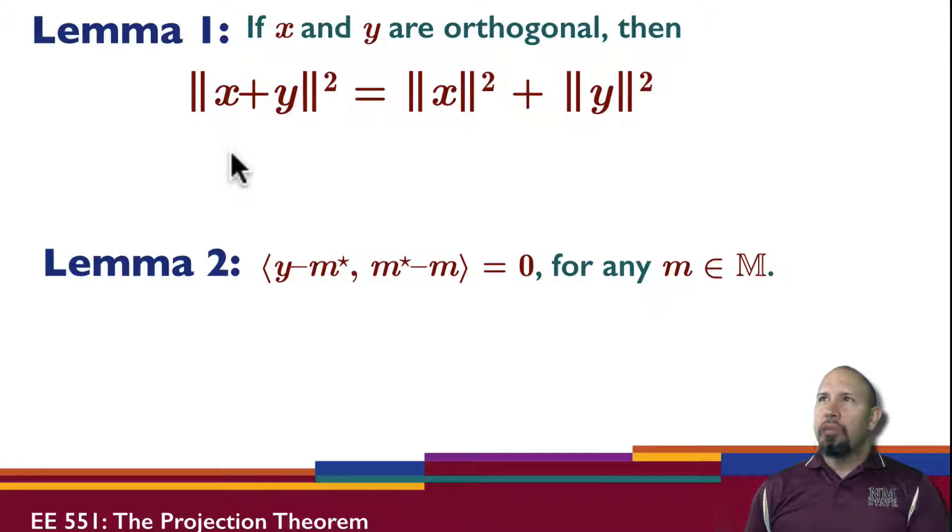In the proof of the projection theorem, we actually use a couple of lemmas. The first one is the vector space version of the Pythagorean theorem. The second one is this orthogonality condition.